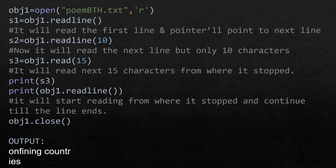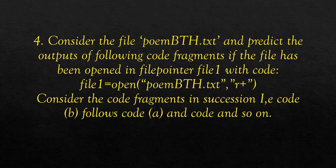Then s2 equals obj1.readline(10), which reads 10 characters starting from where the pointer stopped. s3 equals obj1.read(15), which reads the next 15 characters from where the pointer stopped. Printing s3 shows the corresponding output. Then obj1.readline() is called again, reading from where it stopped and continuing until the line ends, producing the shown output.